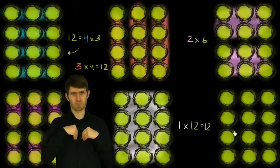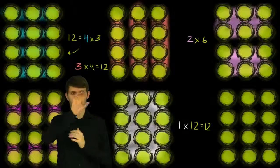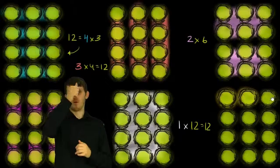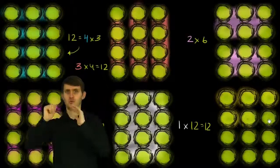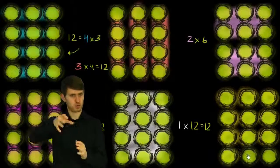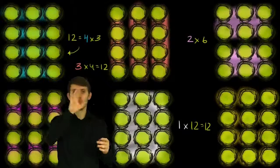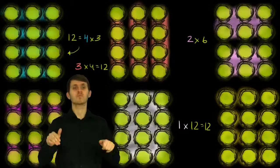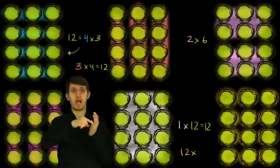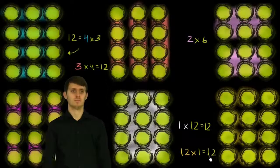We could think of it the other way around. We could view this as 12 groups of 1. This is 1 group of 1, 2 groups of 1, 3, 4, 5, 6, 7, 8, 9, 10, 11, and 12 groups of 1. So we could also write 12 groups, and in each one I have 1. That's still going to get me to 12.